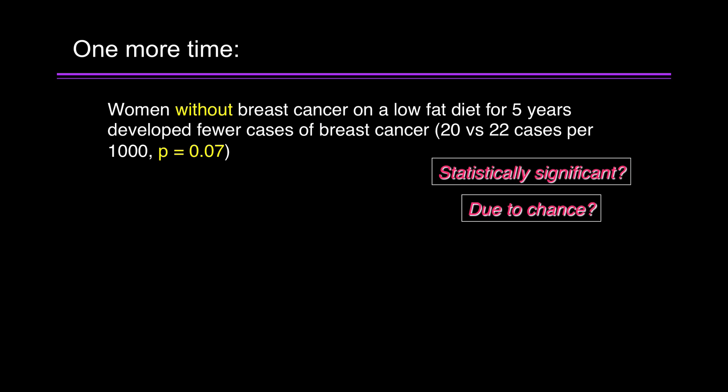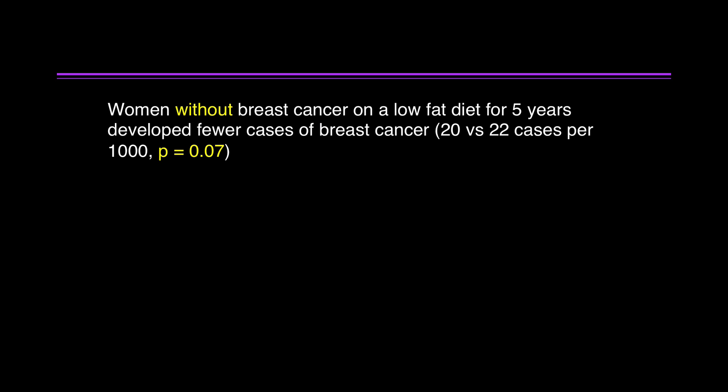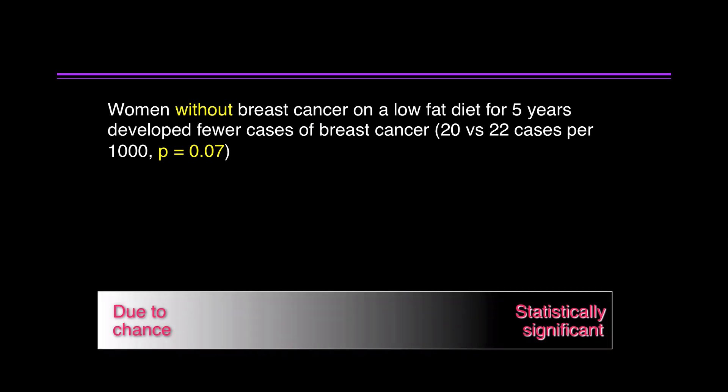But now let me change this. Women without breast cancer on a low-fat diet for 5 years developed fewer cases of breast cancer. 20 vs. 22 cases per thousand. P equals 0.07. Is that statistically significant or due to chance? It's due to chance because the p-value is greater than or equal to 0.05. But you might be a little uncomfortable with that. Why is that? Because there's a spectrum between due to chance and statistically significant.